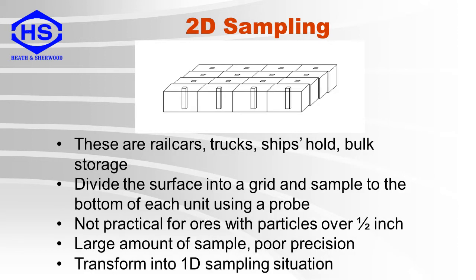Here is an example of 2D sampling. These can be rail cars, trucks, a ship's hold, or bulk storage. This is sampled by dividing the surface into a grid, and samples are taken to the bottom of each unit using a probe. This is not practical for ores with particles over about half an inch. This kind of sampling creates a large amount of sample and possibly poor precision. This can sometimes be transformed into 1D sampling.